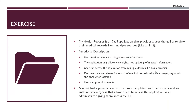Let's take an example: an application called My Health Records, a SaaS application used for managing patient data. A user must authenticate using a username and password, the application allows view rights only — not updating medical information — users can access from multiple devices, and there's a document viewer to view and print medical records. A penetration test found an authentication bypass that allows access to the application as an administrator, giving access to PHI — the pen tester was able to log in as an admin through elevation of privileges or bypassing authentication by other means.